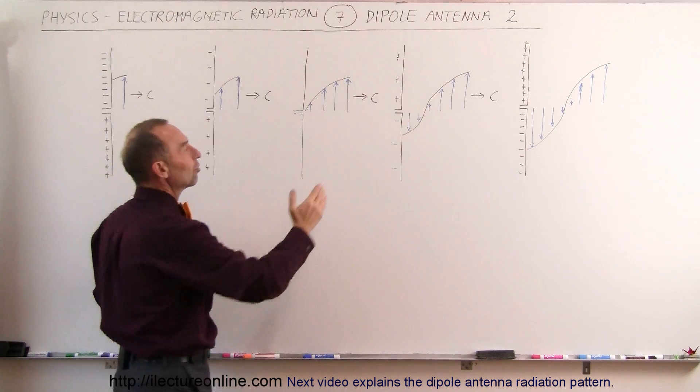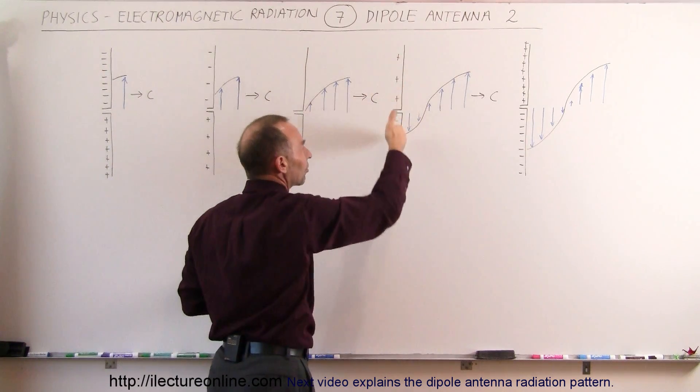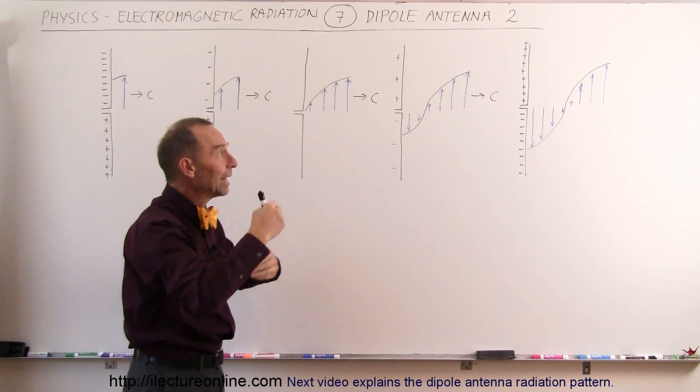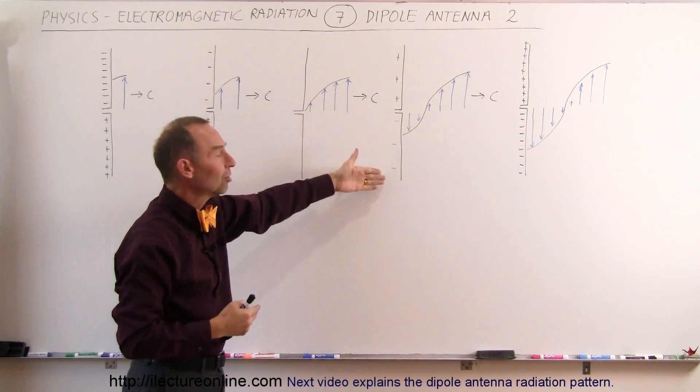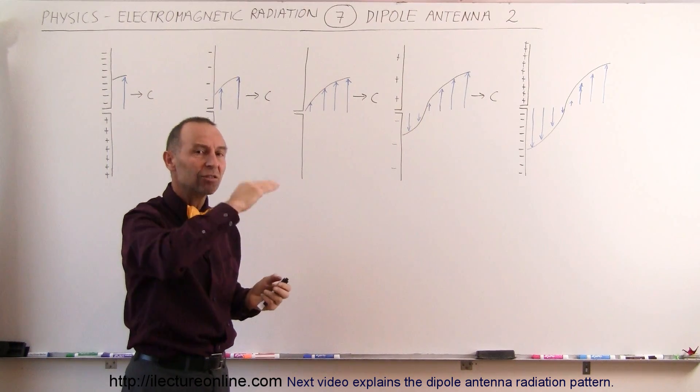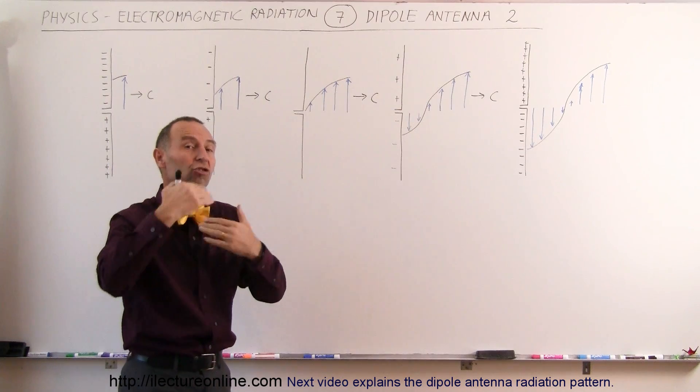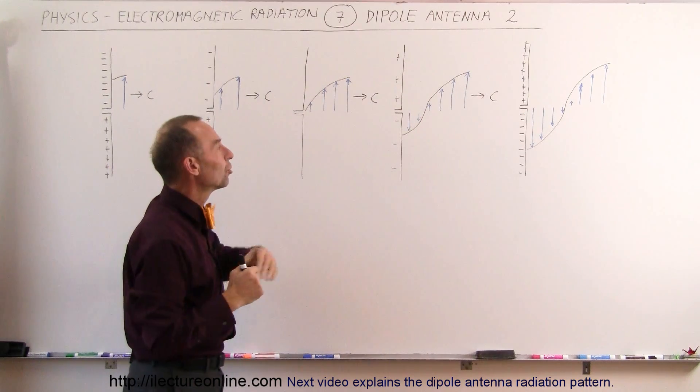Then the polarity changes, now there's negative charge at the bottom, positive charge at the top, so the electric field is now directed downward, and as the amount of charge increases, notice that the voltage across the antenna is constantly changing as a sine wave, which then is associated with the amount of charge on the antenna in both directions.